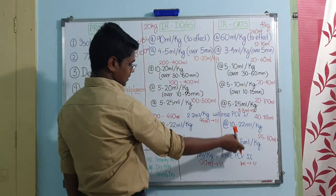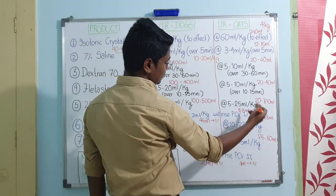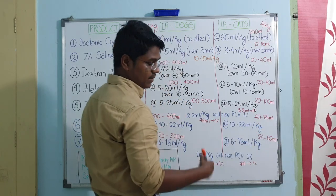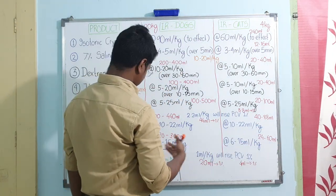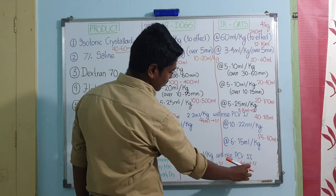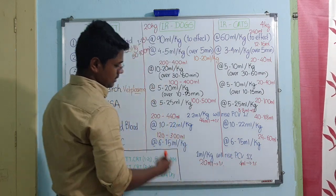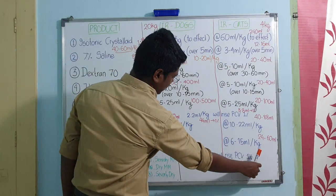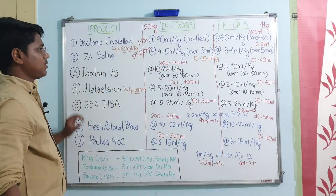For packed RBC - dose rate is obviously less since you have extracted only the RBC: 6 to 15 ml per kg body weight. For a 20 kg dog, 120 to 300 ml. Formula: 1 ml per kg will raise PCV by 1%, so for a 20 kg dog, 20 ml increases PCV by 1% - to increase by 5%, give 100 ml. In cats, same dose rate; for a 4 kg cat, 24 to 60 ml. With a lab: 4 ml of packed RBC will raise PCV by 1%.